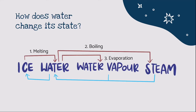When steam and water vapour form water, we say that it has condensed into water. And when water changes into solid ice, it is freezing. Notice that the dark red arrows represent a gain of heat, while the light blue arrows represent a loss of heat. We shall find out more about each of the five processes in the subsequent slides.